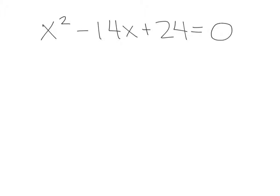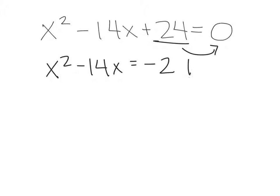Hi Jen. I know you were having some trouble with completing the square yesterday and we didn't have time to finish, so I just wanted to go over a couple more examples before your test tomorrow. So for this problem, for completing the square, you want to make sure that you get your constant on the other side of the equation. So we'll rewrite it: x squared minus 14x equals negative 24.